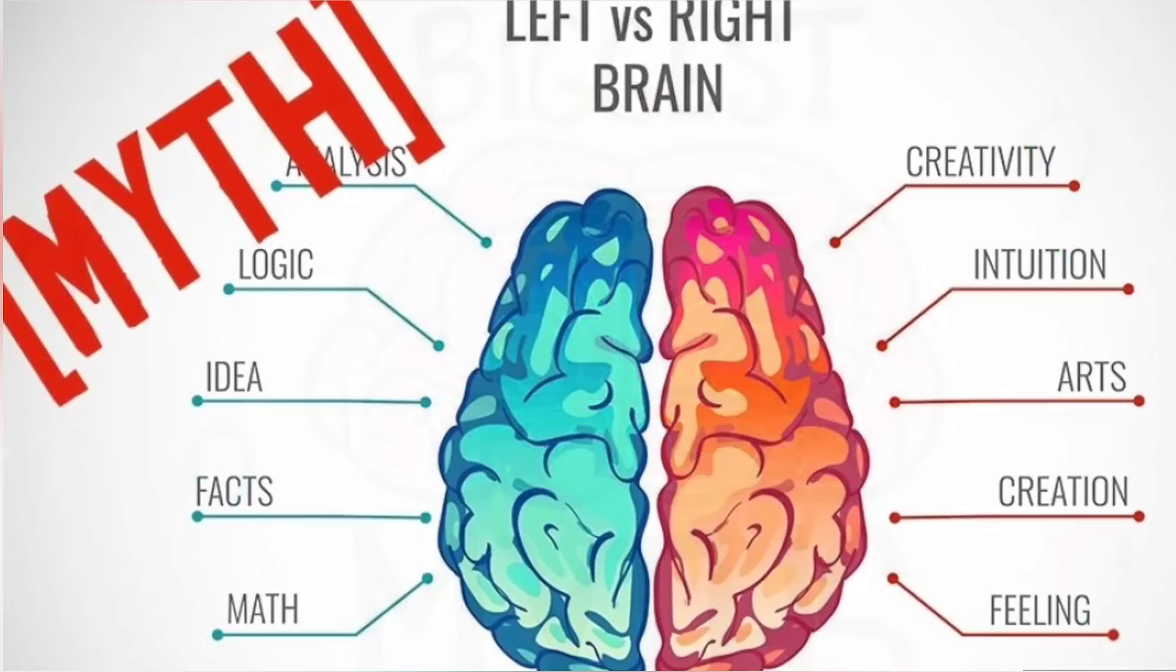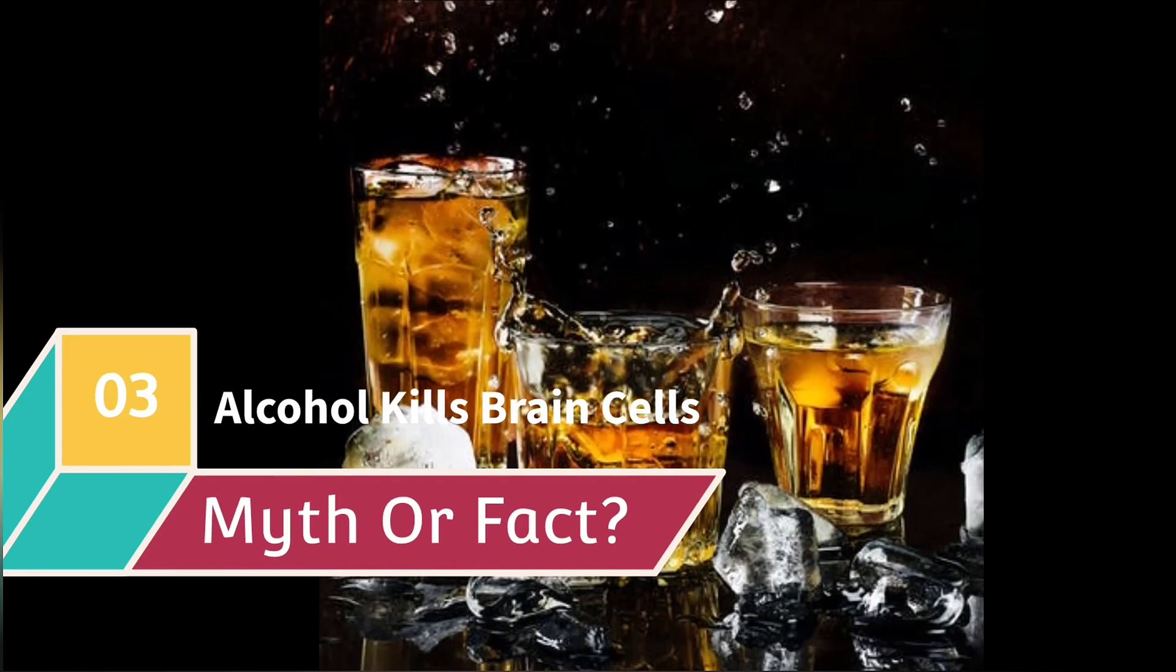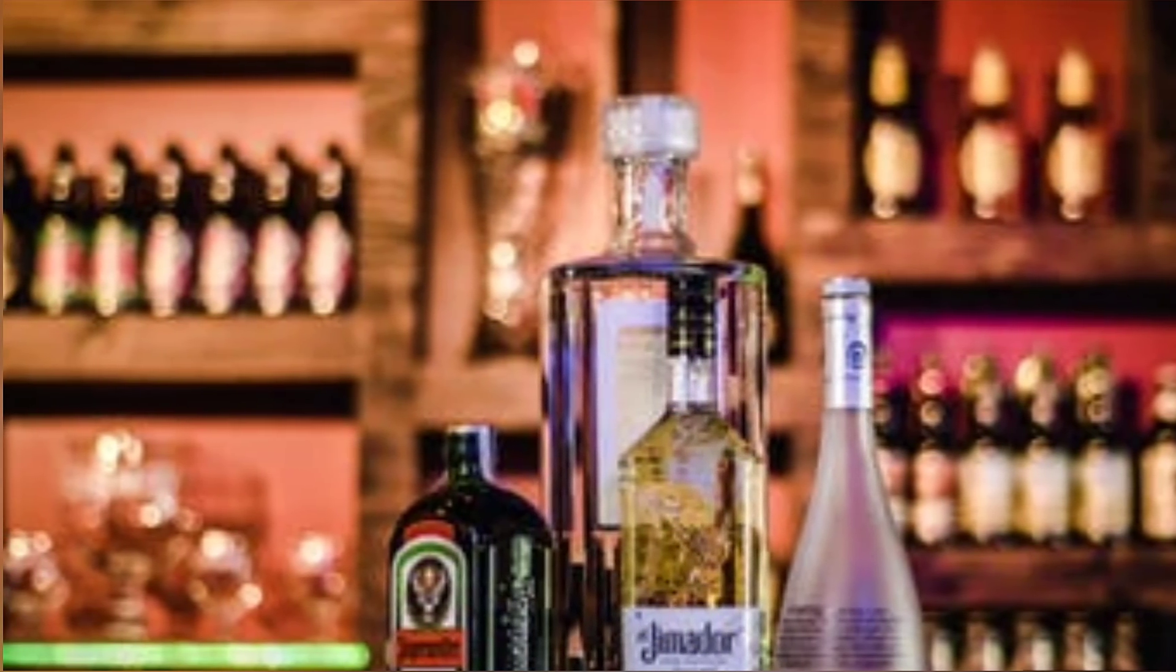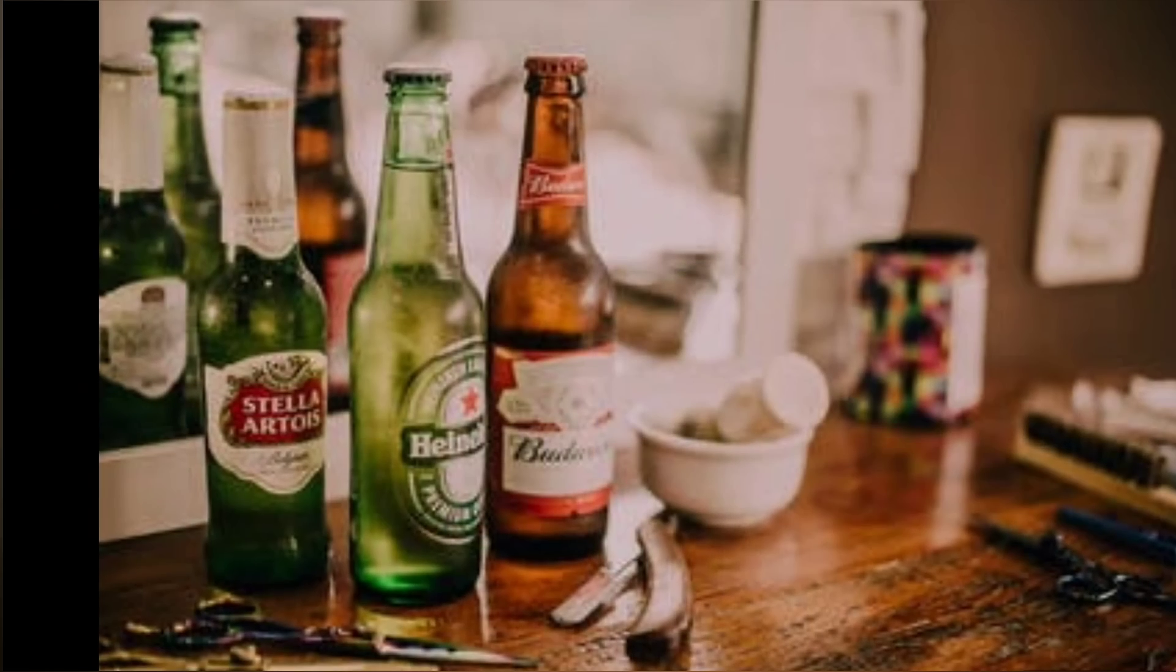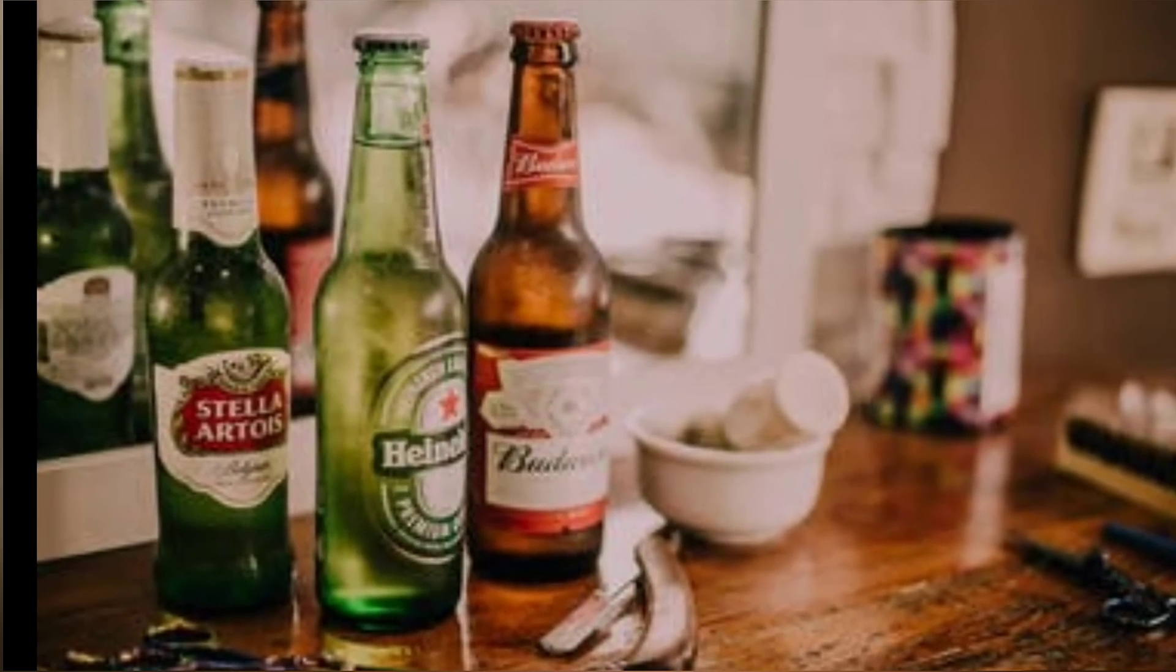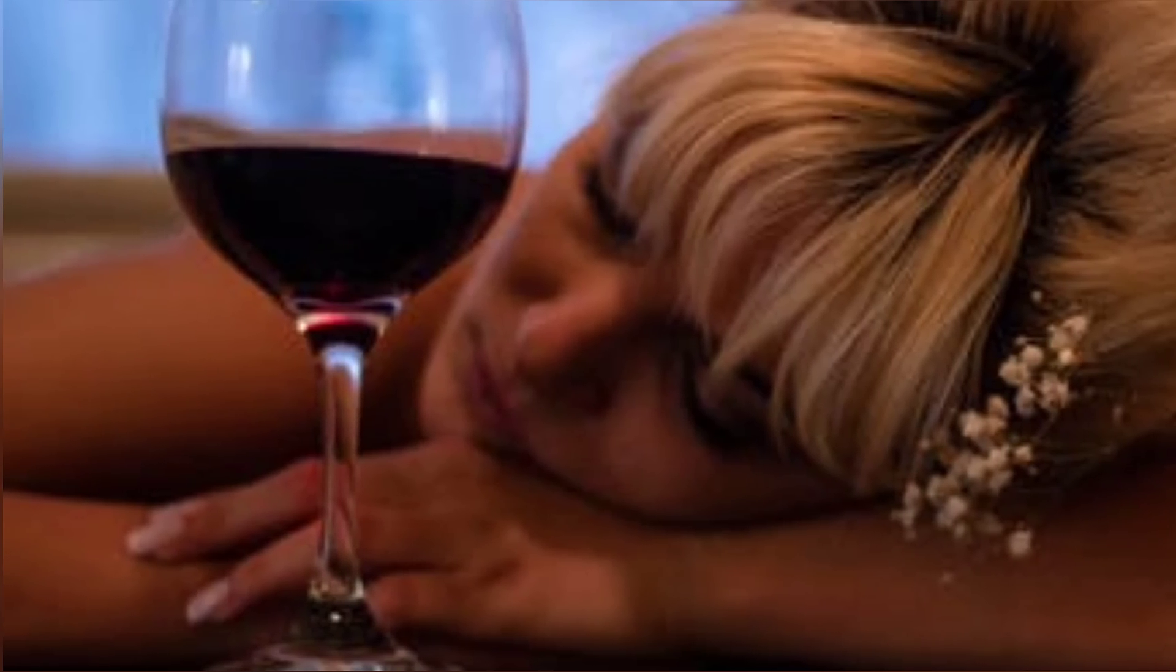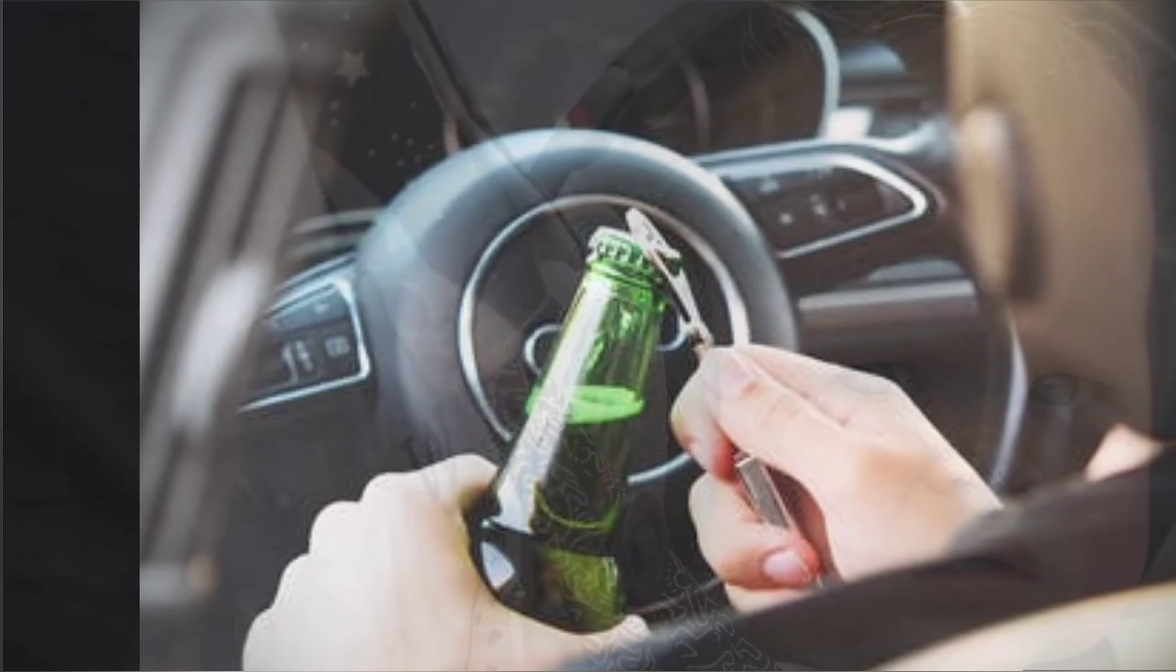Myth number three: alcohol kills brain cells. The truth is moderate alcohol use doesn't kill brain cells. However, binge drinking or frequent sustained drinking can damage the ends of neurons called dendrites. This damage can affect the ability of neurons to convey messages to each other. In addition, people with alcohol addiction can develop a neurological disorder called WK syndrome, resulting in vision changes, loss of muscle control, and impaired memory.